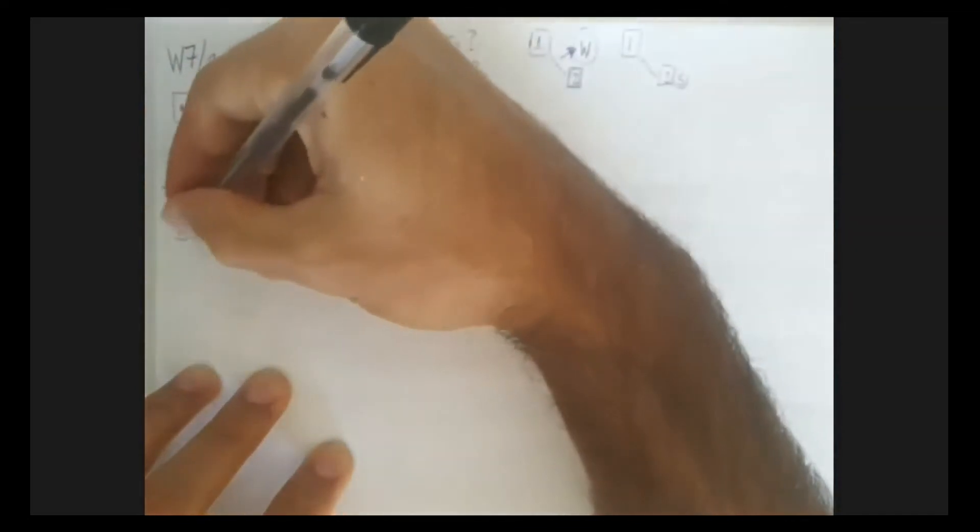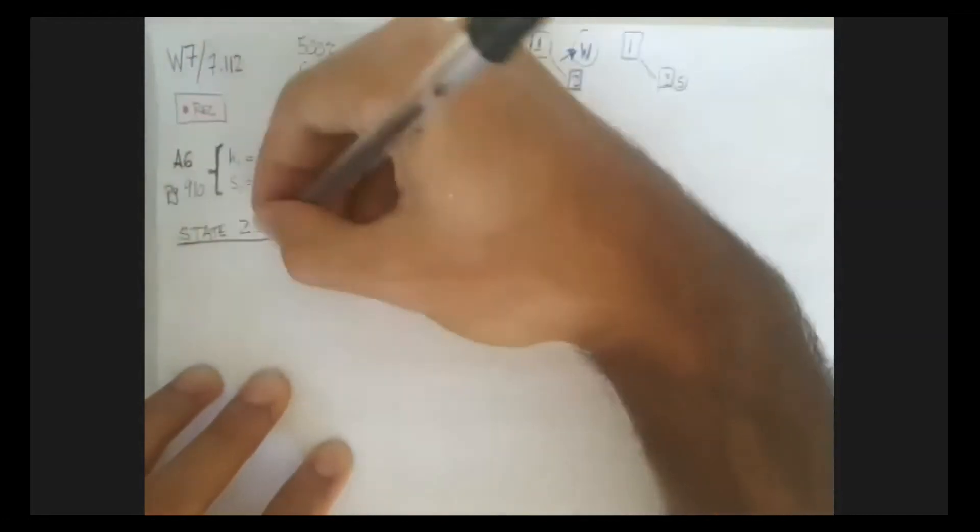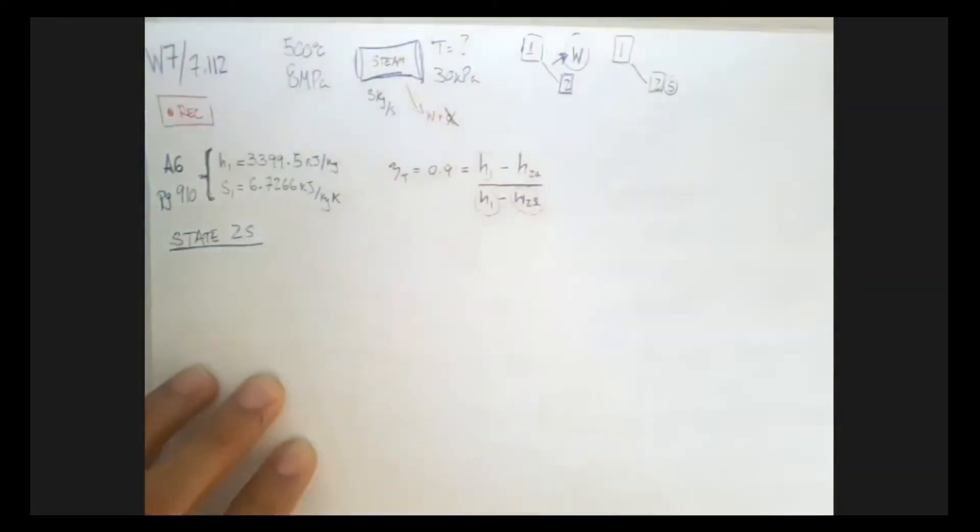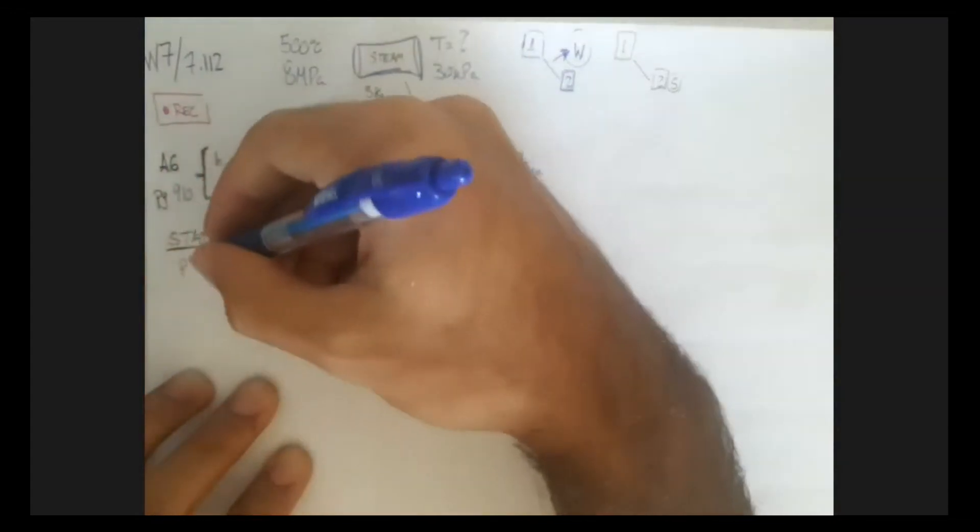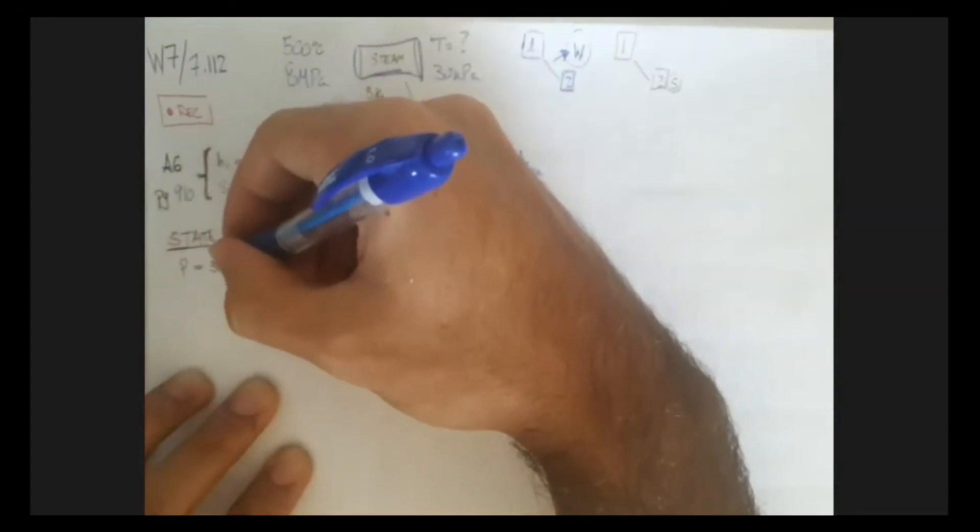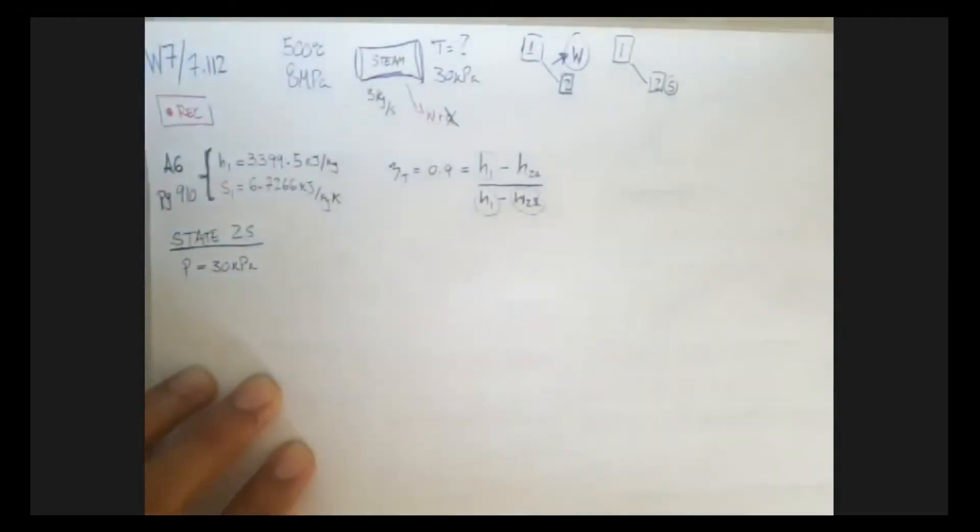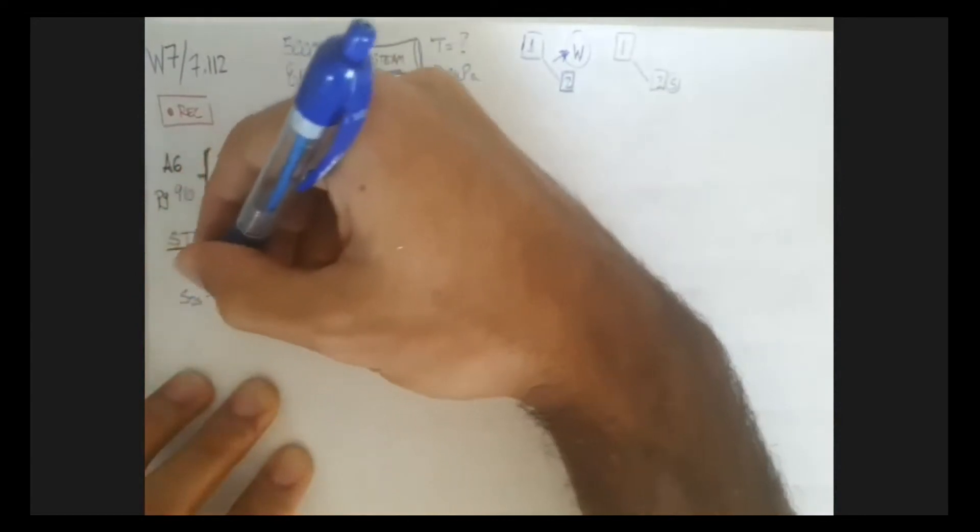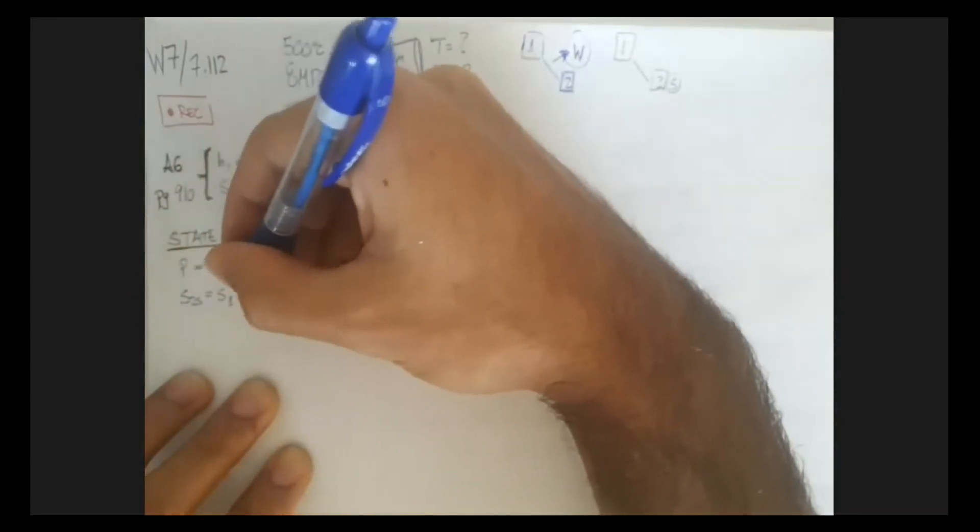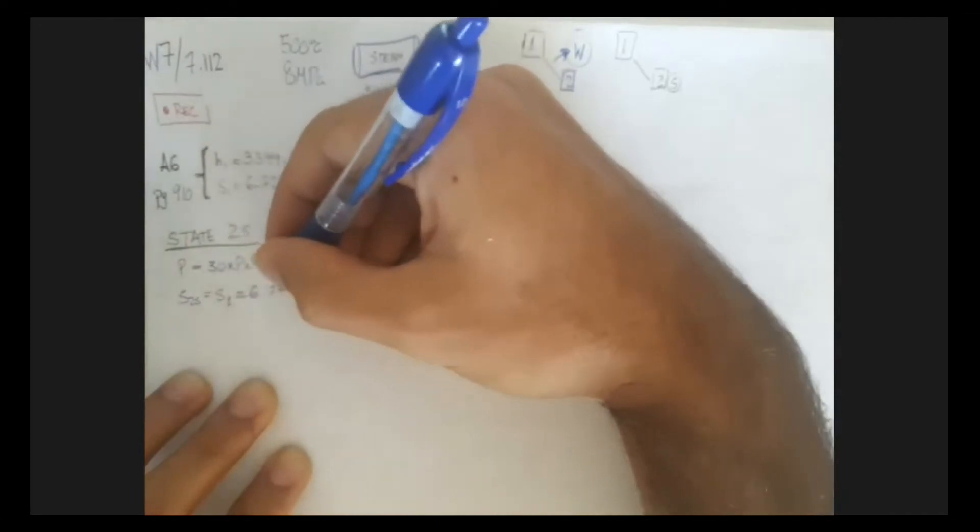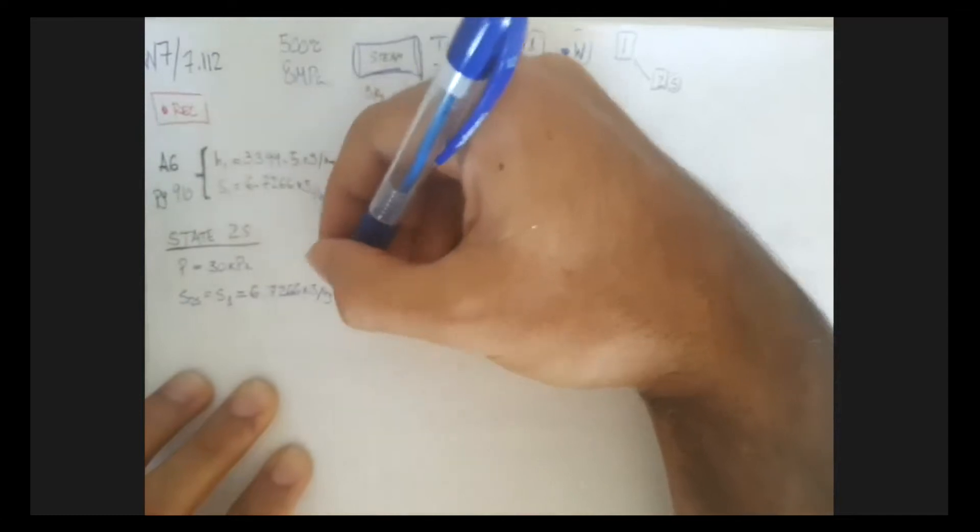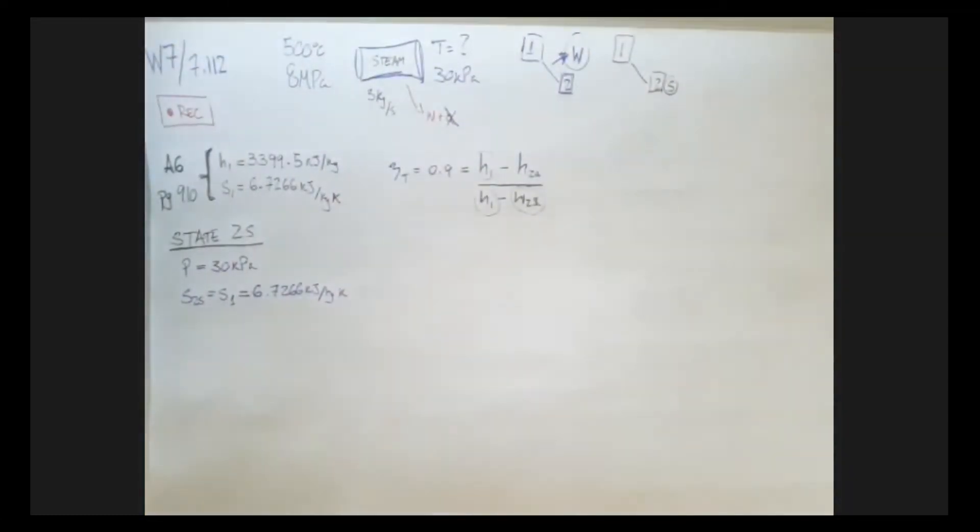So let's go ahead and do that. Let's find our state 2s, isentropic state. There's only two things we need to define a state, and the two things are right in front of us. The pressure of this guy here, this 2s state, is 30 kilopascals, that's a given. And the entropy of this guy here, entropy of the 2s state has to be equal to the entropy of the first state, which we have from the table to be 6.7266. So we have two things, as long as we have two things, we have the defined state.